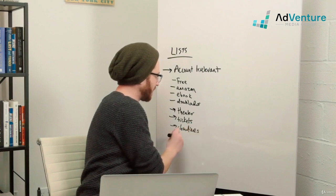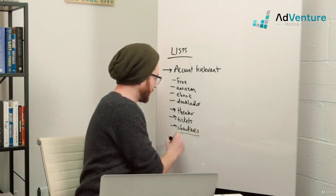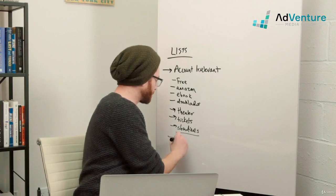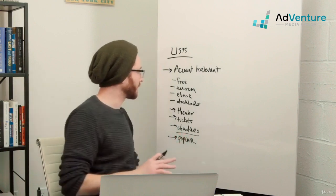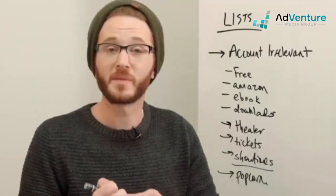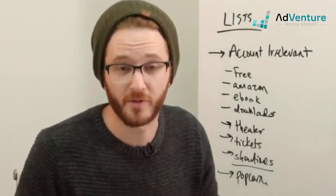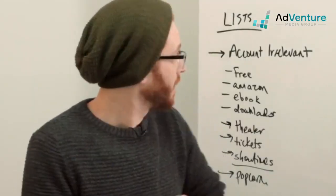Showtimes could actually be relevant, so that might belong at the campaign or ad group level rather than account irrelevant. Terms like 'popcorn' are another example. You have to think about all the terms that might trigger searches for similarly named products.